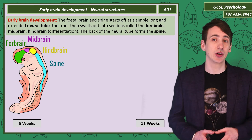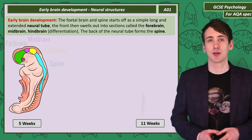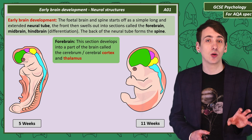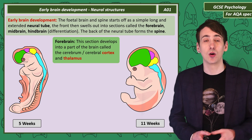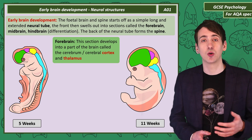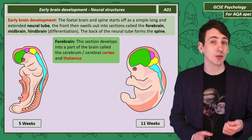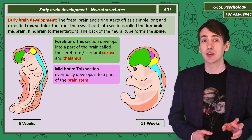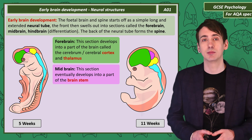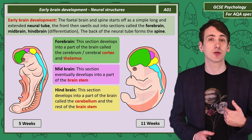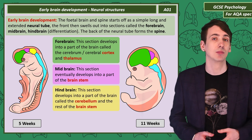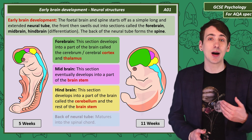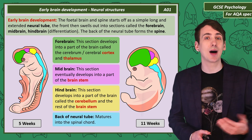What happens to those early structures is as follows. The forebrain develops into the largest section of the brain, called the cerebrum or the cerebral cortex. The thalamus also comes from the forebrain. The midbrain eventually develops into part of the brain stem, and the hindbrain develops into a structure called the cerebellum as well as the rest of the brain stem. The back of the neural tube becomes the spinal cord.